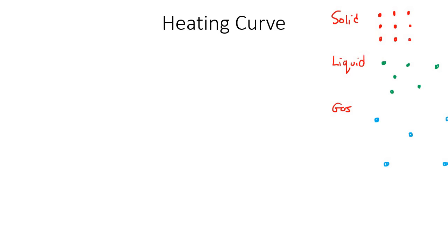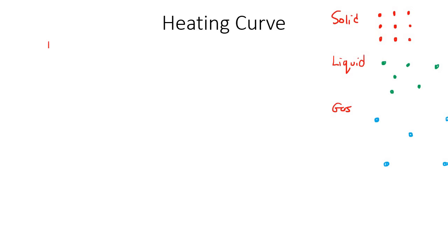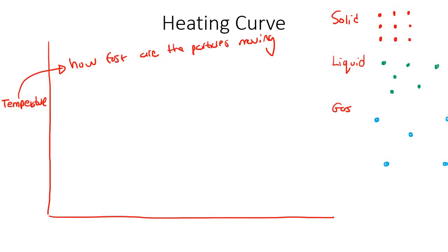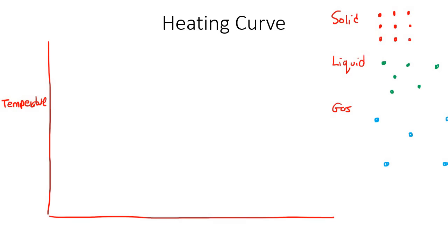On a heating curve, you've got a y-axis and an x-axis. Your y-axis is going to be called temperature. Remember what temperature is? Temperature is how fast the particles are moving — it's the kinetic energy, or average kinetic energy. So if the particles begin to move faster, the temperature goes up; if they move slower, the temperature goes down; if they keep the same speed, the temperature remains constant. And then on the x-axis, we have time.